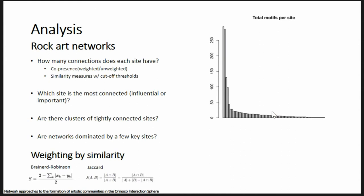The question I wanted to ask is essentially: given a big table of counts, how many connections does each site have to other sites — the degree — based on the co-presence of motifs, both weighted and unweighted, weighting by the quantity of motifs in each site, and then formal similarity indices. From there, which sites are the most connected, most influential in the network, and what is the overall structure of these networks based on inferred importance?